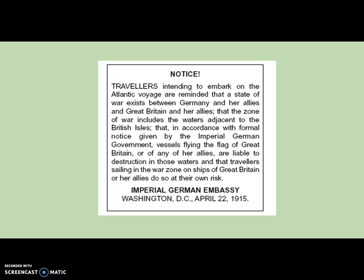This notice reminds travelers intending to embark on the Atlantic voyage that a state of war exists between Germany and her allies and Great Britain and her allies; that the zone of war includes the waters adjacent to the British Isles; and that in accordance with formal notice given by the Imperial German government, vessels flying the flag of Great Britain or her allies are liable to destruction in those waters, and that travelers sailing in the war zone do so at their own risk. This was a notice published in the United States warning passengers about to embark on the Lusitania that it was potentially entering waters where German U-boats could unleash torpedoes — and that's exactly what ended up happening.